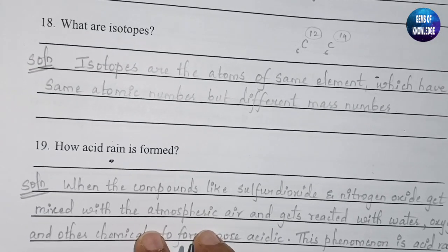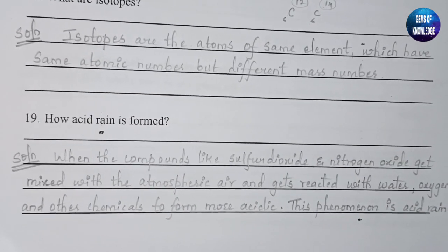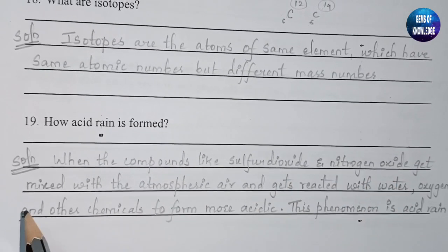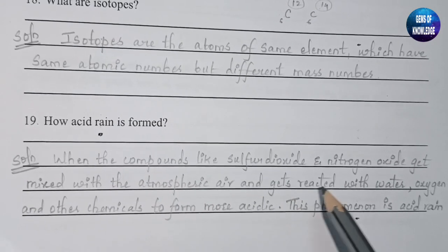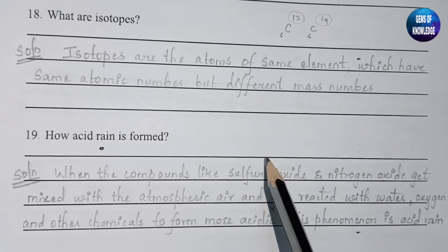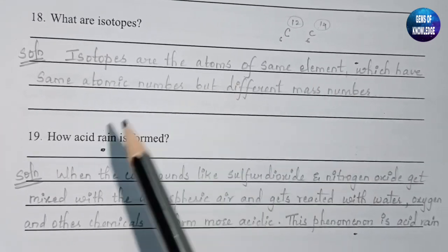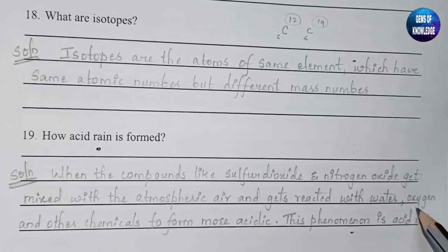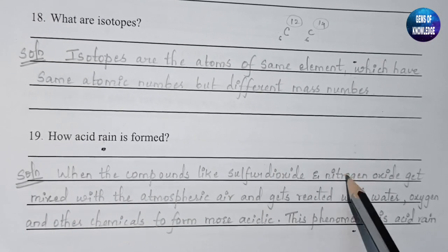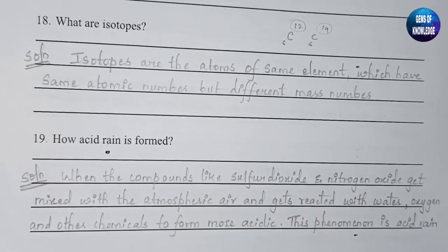Question 19: How is acid rain formed? When compounds like sulfur dioxide (SO₂) and nitrogen oxide (NOₓ) get mixed with atmospheric air and react with water, oxygen, and other chemicals, they form more acidic substances. This process of making the atmosphere acidic is known as acid rain.